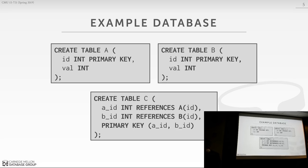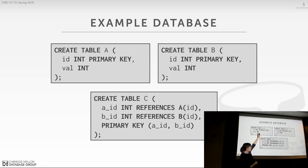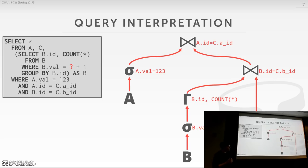To give a quick example of what kinds of things we're going to do, here's a really simple database with three tables A, B, and C. A and B have primary keys and C just has foreign key references to both of them. If you're not doing code specialization — not doing compilation — you're doing interpretation. So what does that look like?